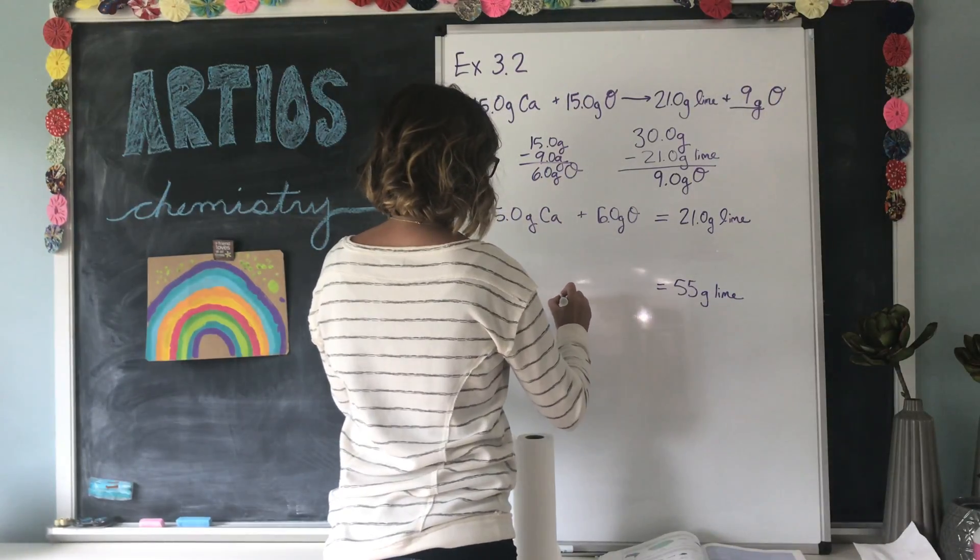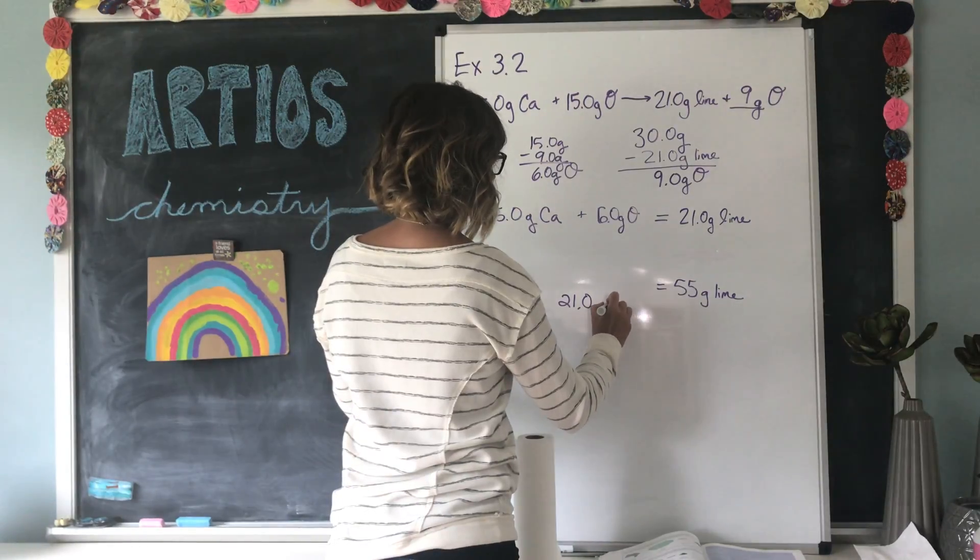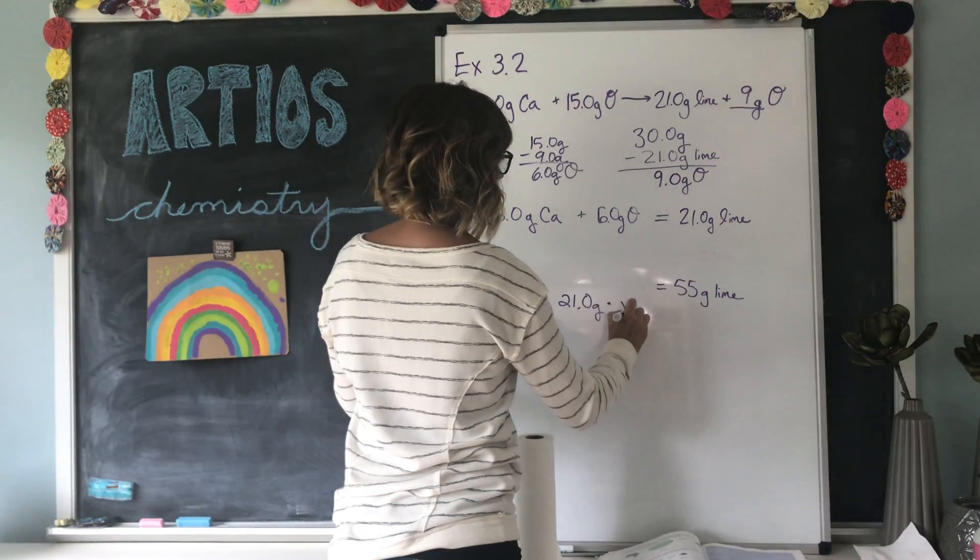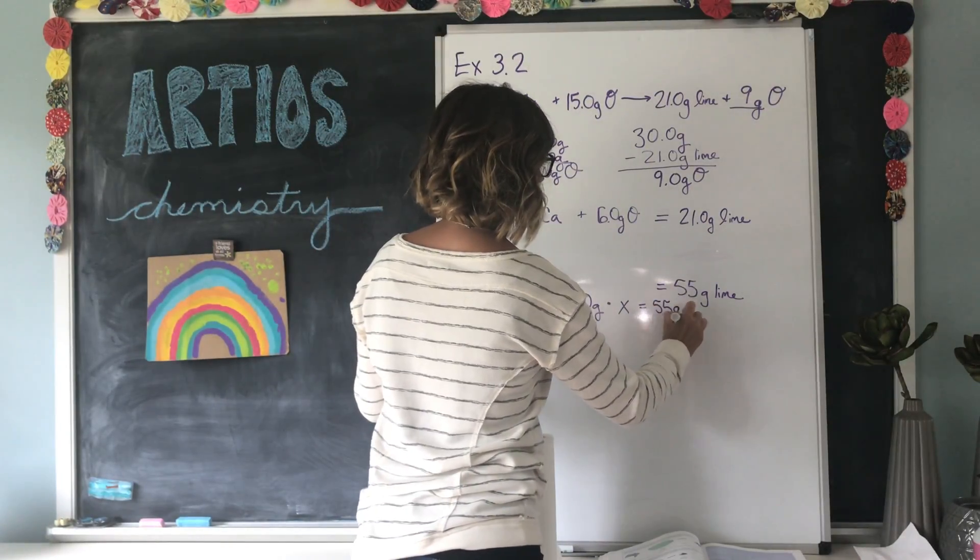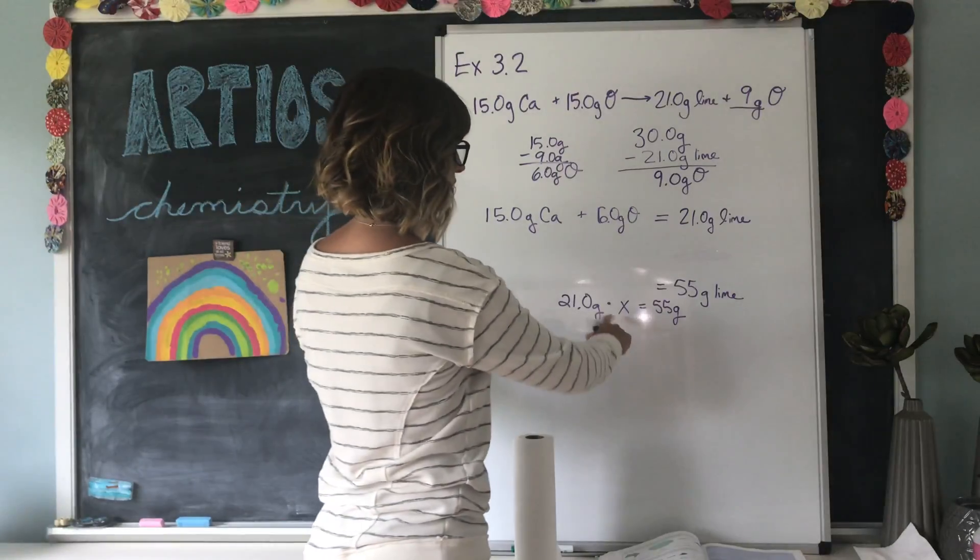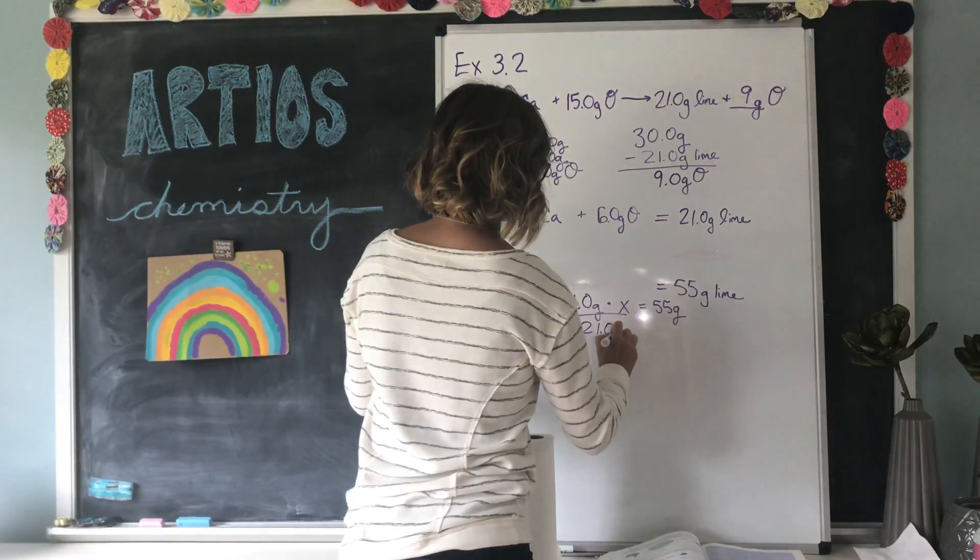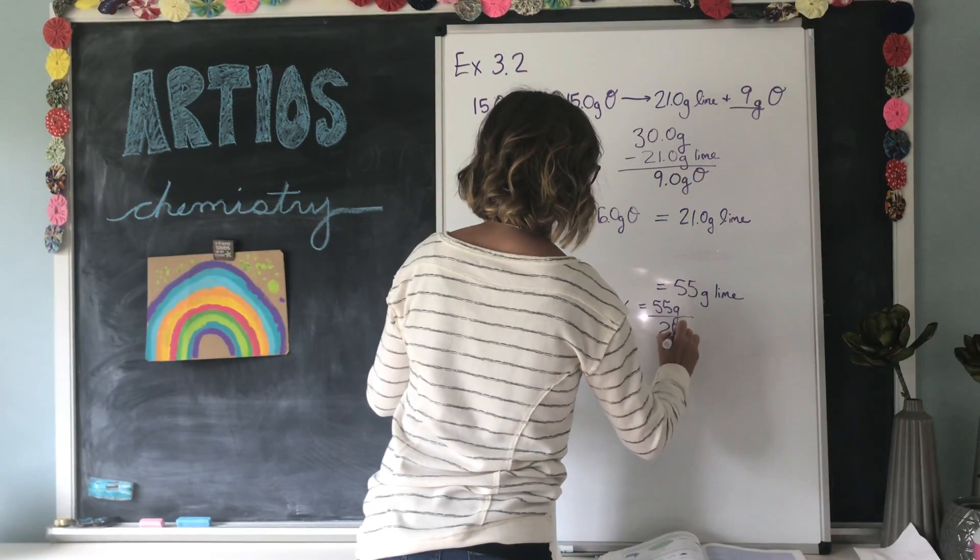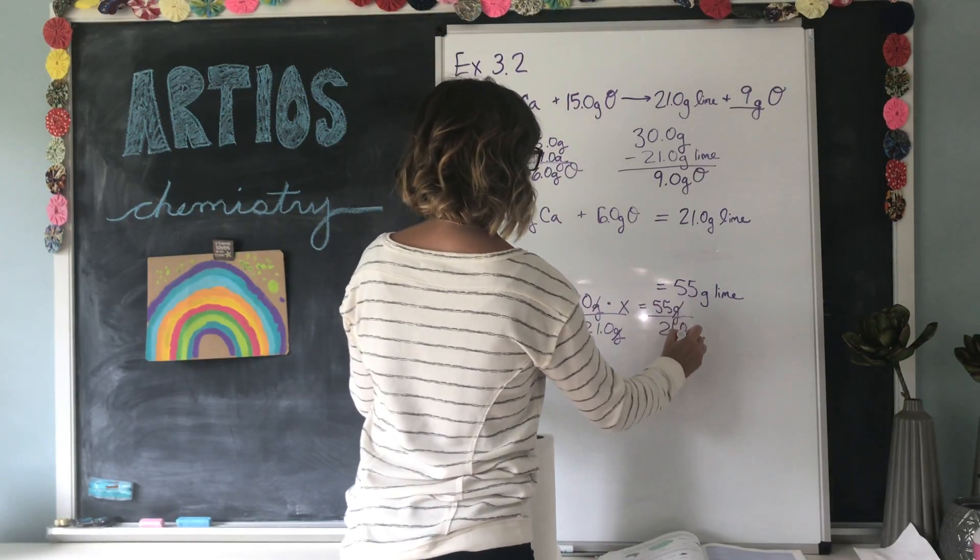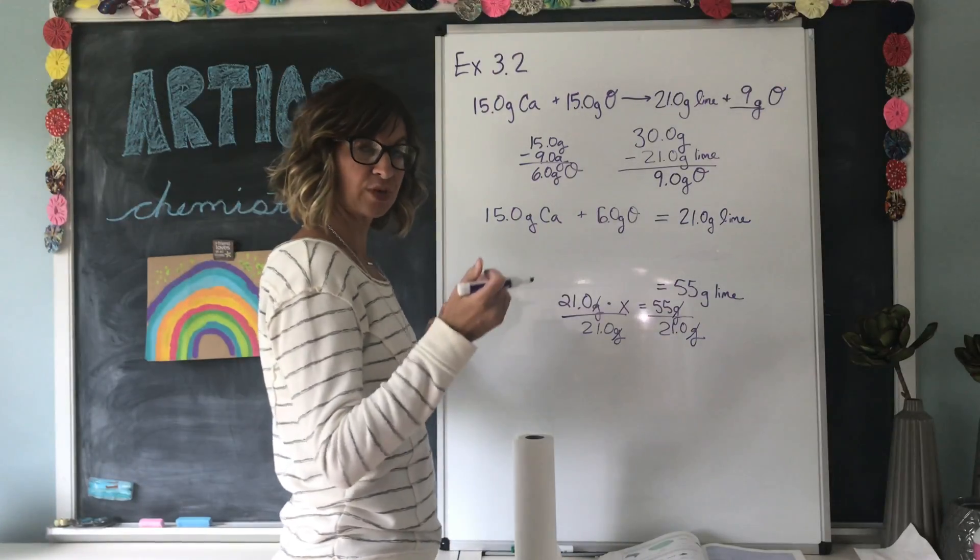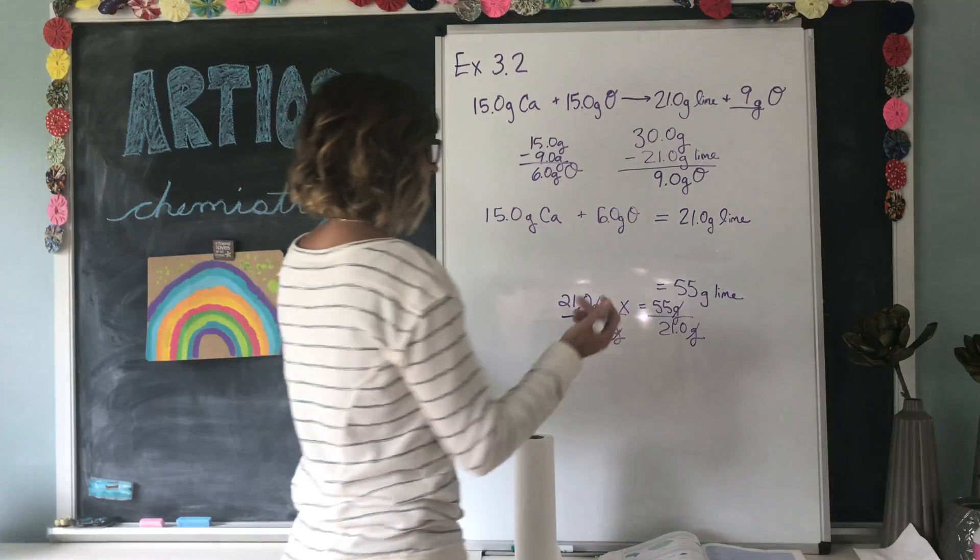So we're wondering 21.0 grams times, let's call it X, times what will equal 55 grams? What is that number that we're going to be multiplying by? So we divide both sides by 21.0 grams. The units cancel out, so our answer is actually not going to have any units. Your book tells you it's called the dimensionless quantity because it's just a number this time.